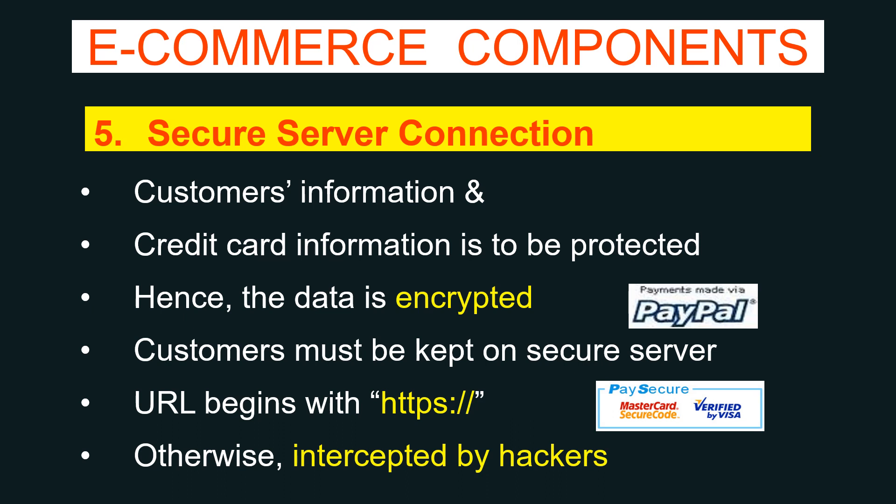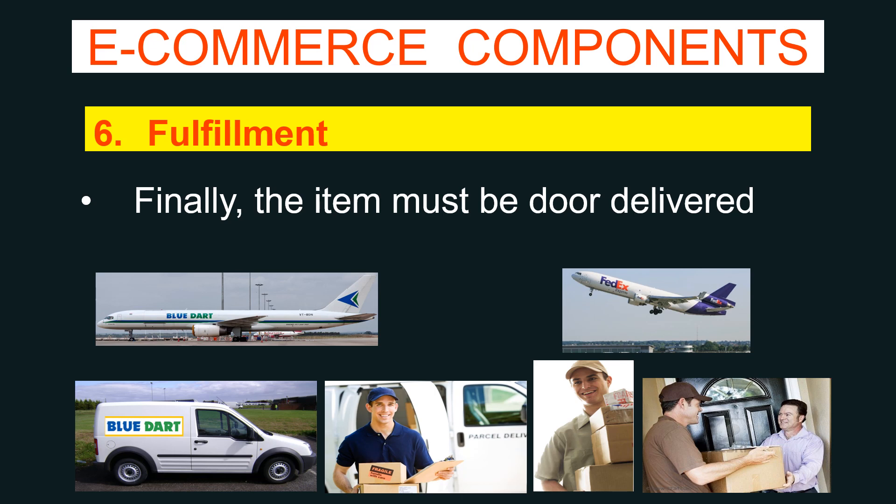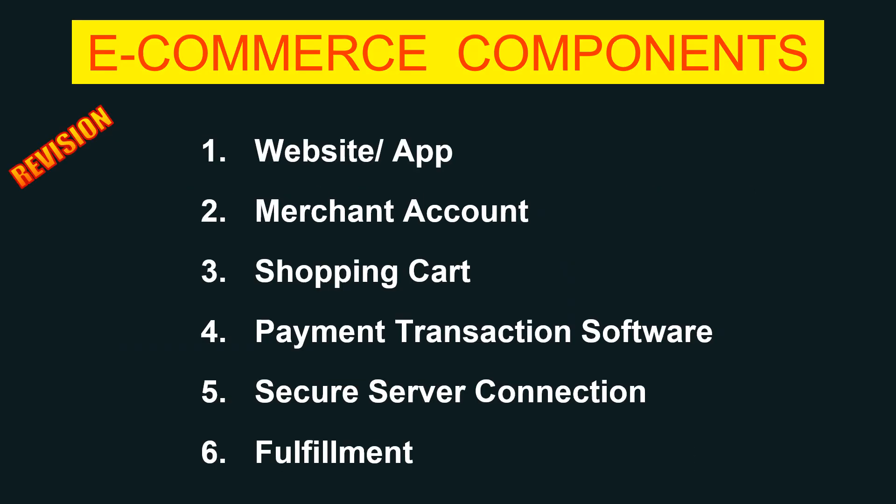If the website address does not begin with HTTPS, there is every chance of data being intercepted by hackers. The sixth and last component is fulfillment. After the customer makes a payment, the seller sends the product and it is door-delivered to the customer. Online sellers take the help of various logistic service providers, and some e-commerce providers like Flipkart or Amazon have their own in-house logistic systems.